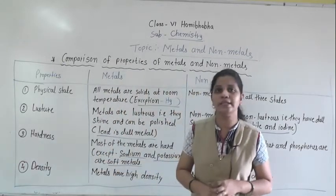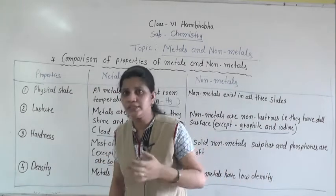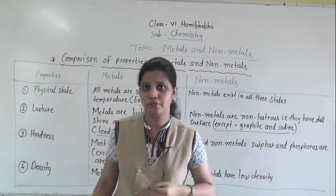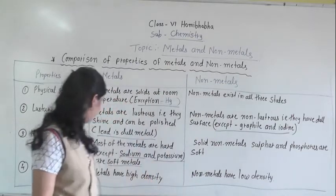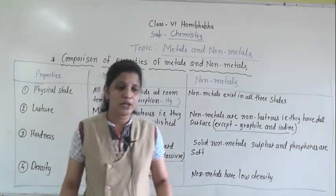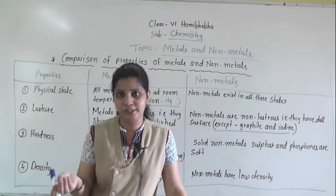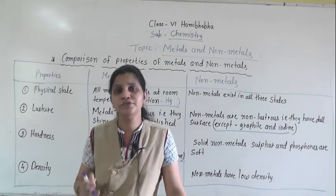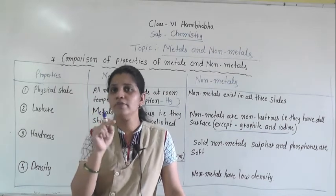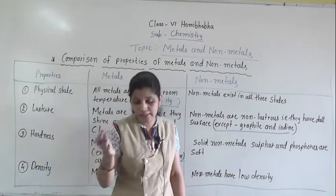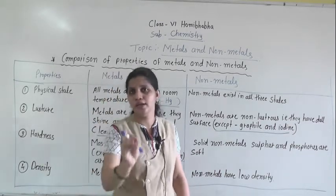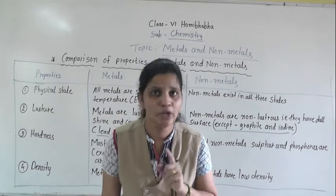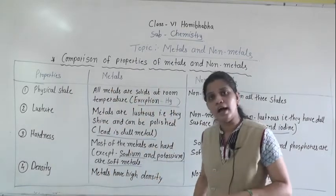The fourth physical property is density. Metals have high density. For example, if you put an iron piece and a plastic pen in water, the iron block will sink because it has more density than plastic. Non-metals have low density. So metals have high density and non-metals have low density.